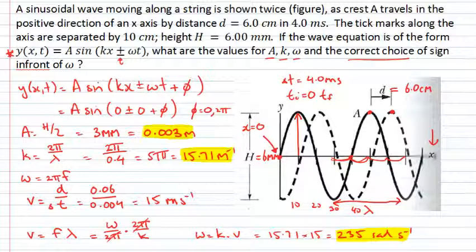Well, you can either sort of commit to memory that if my wave is moving in the positive x direction, then it's going to be minus omega t. So you could recall that, or you could actually just work out what's going on here.